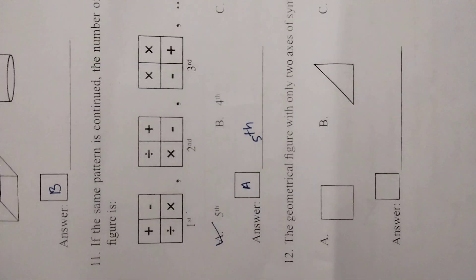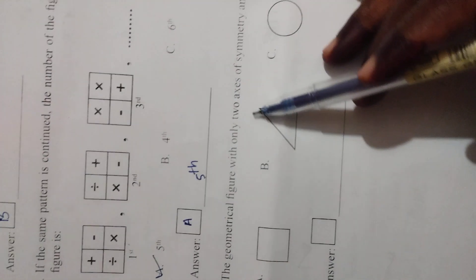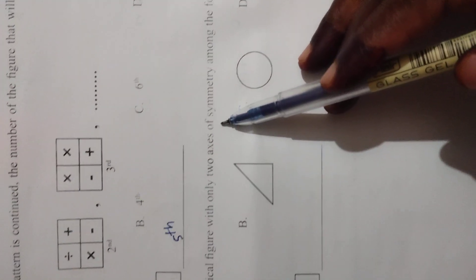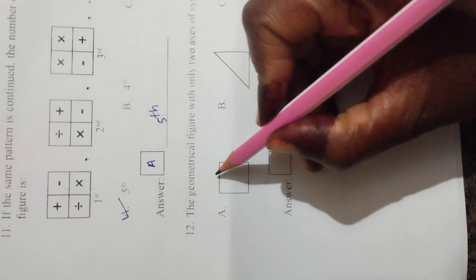The geometrical figure with only two axes of symmetry among the following is. Then here two geometrical lines we need. This is we can, this also we can. So A is the correct answer.